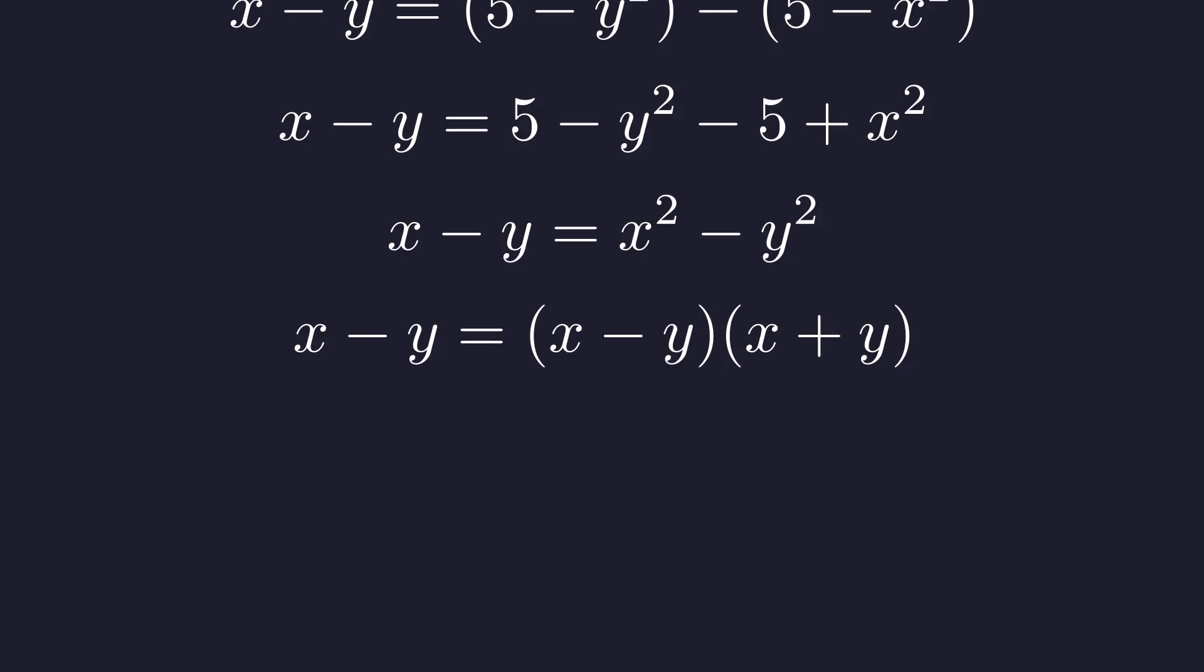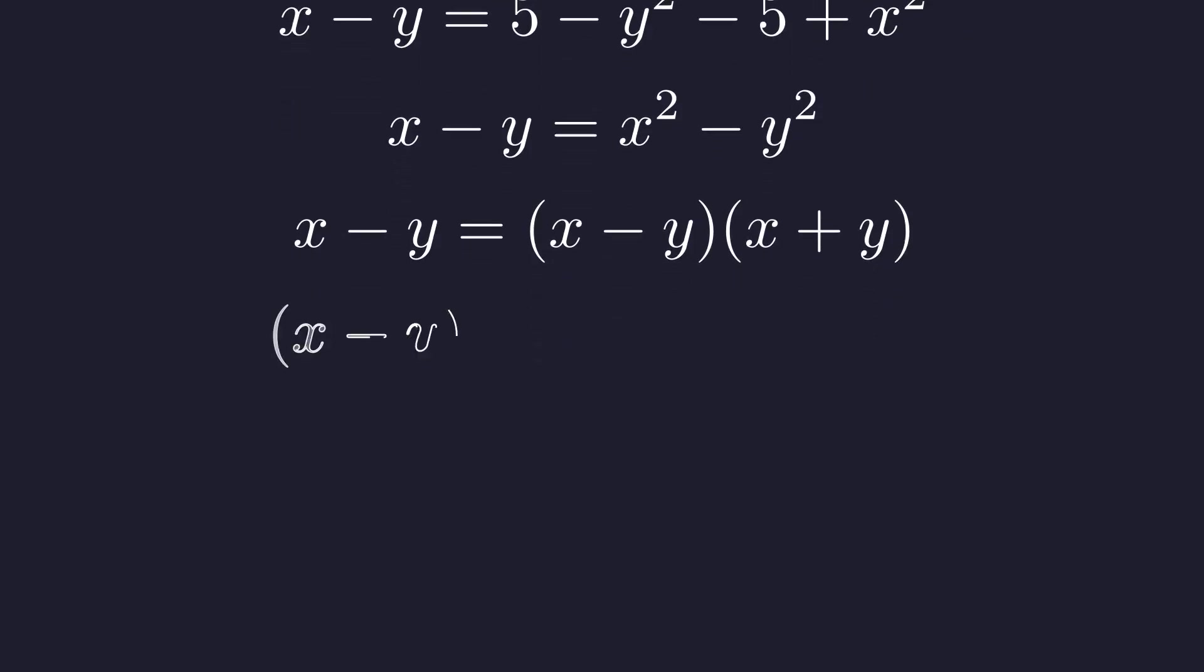Factoring gives us x minus y equals the quantity x minus y times the quantity x plus y. If x is not equal to y, we can divide both sides by x minus y. If x equals y, that's one case. Factoring out the common term leaves us with this. By the zero product property, either x minus y equals zero or x plus y minus one equals zero.